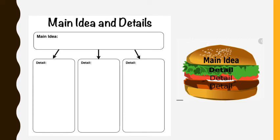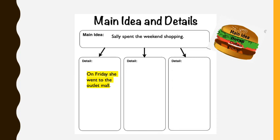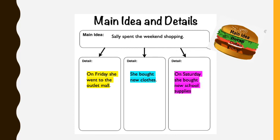Now let's have a look at this graphic organizer. We need to put our main idea and details into it. Our main idea is: Sally spent the weekend shopping — this is the main topic, the most important information. The details are: on Friday she went to the outlet mall, she bought new clothes, and on Saturday she bought new school supplies. These are the details that support our main idea. Remember, think about the lovely cheeseburger!